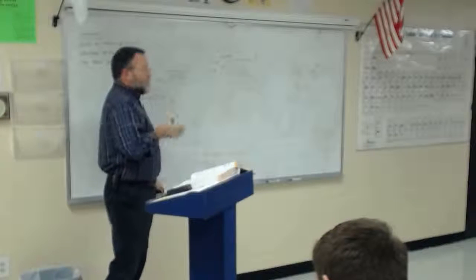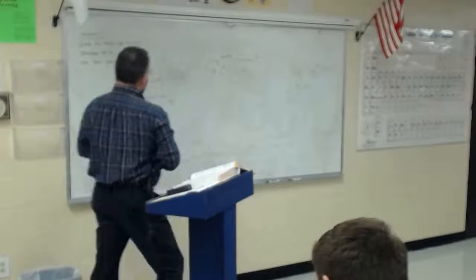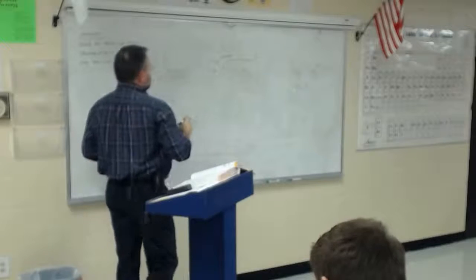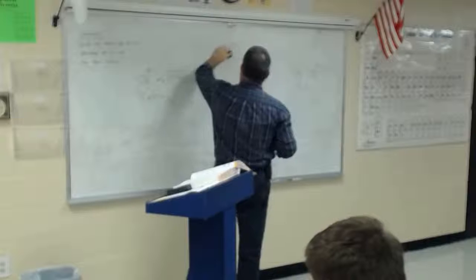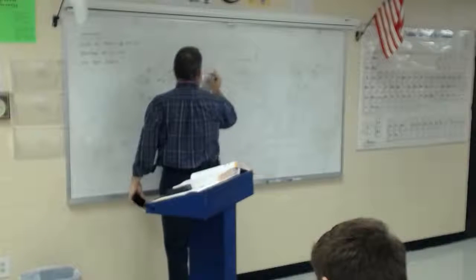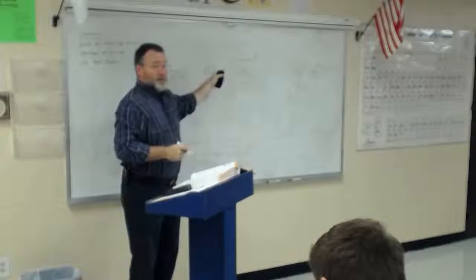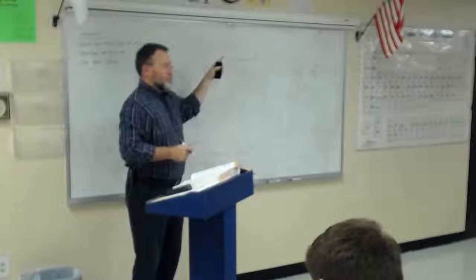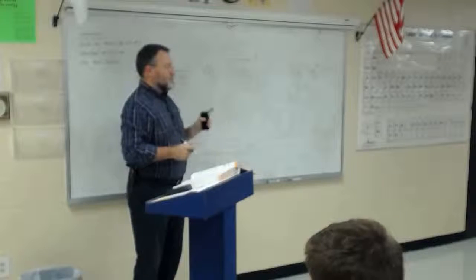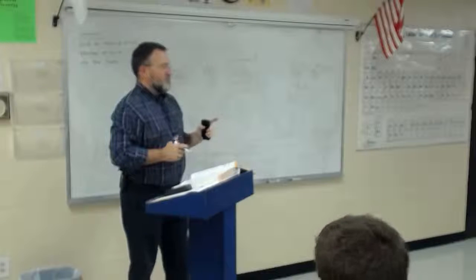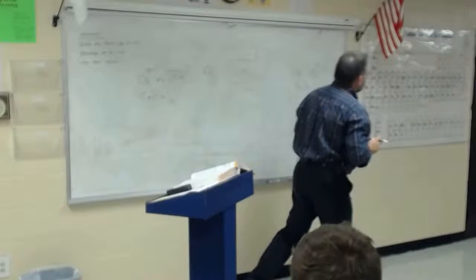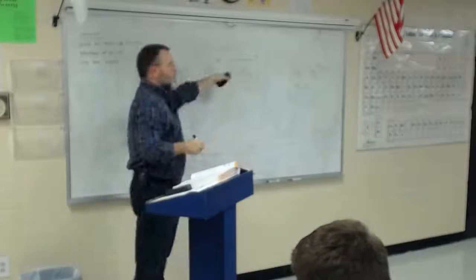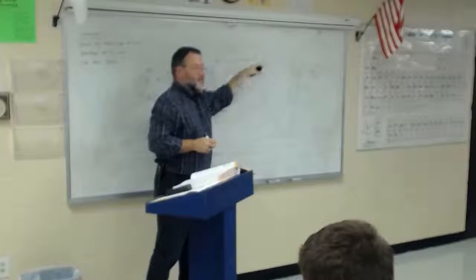Now let's make aluminum chromate. Aluminum is a column 3A metal — it wants to become +3. Chromate, CrO₄, has a net -2 charge. What is the formula for aluminum chromate? Using the transpose method: Al₂(CrO₄)₃. Aluminum is 3-positive and I have two of them — that's six positives. Each chromate is -2 and I have three of them — that's six negatives. Six positive, six negative — they cancel. That is the molecule.